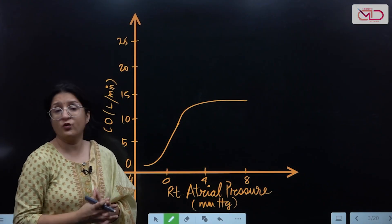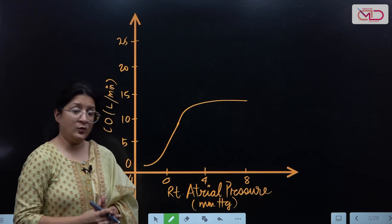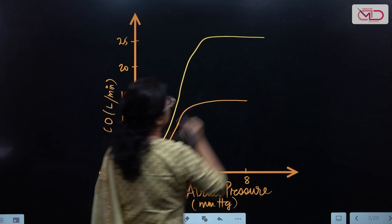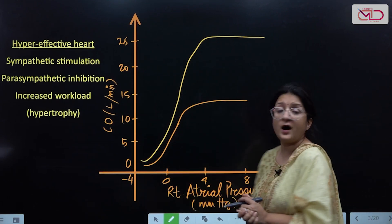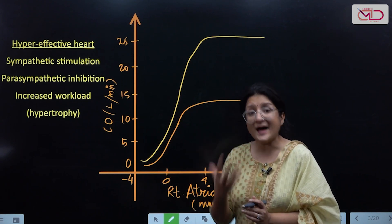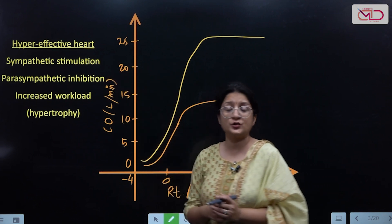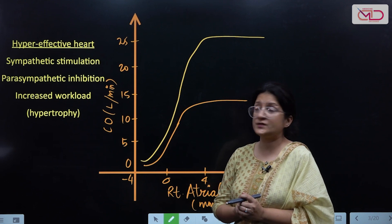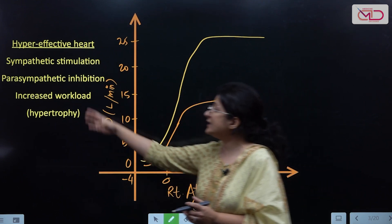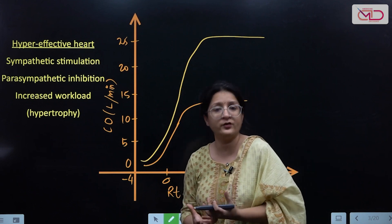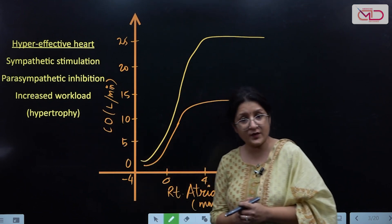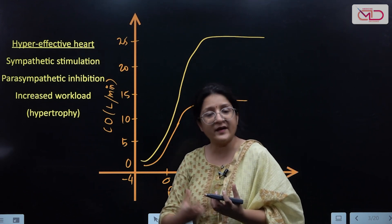In situations where the heart beats faster or pumps more effectively — when cardiac contractility increases — the cardiac output increases even further, and we call this a hyper-effective heart. This happens with sympathetic stimulation, for example during periods of stress, anxiety, or excitement, where heart rate and cardiac contractility both increase. Situations like parasympathetic inhibition or increased workload on the heart — such as in marathon runners who train their hearts to pump more effectively — also lead to cardiac hypertrophy and a more effective pump.